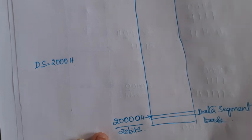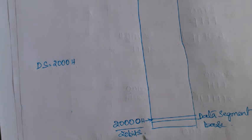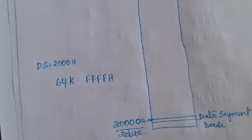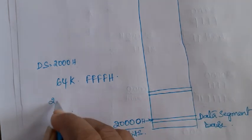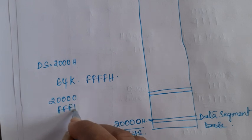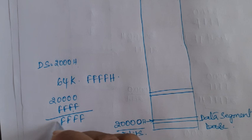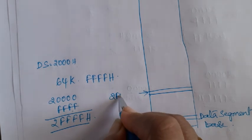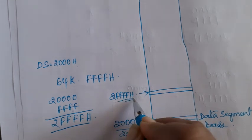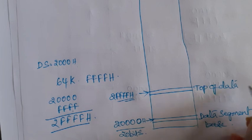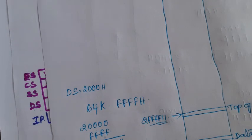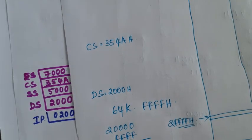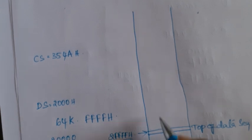This 20-bit base address — with the four least significant bits always being 0 — defines the start of the data segment. Since each segment is 64K, the end address of the data segment is obtained by adding 64K (FFFFh) to the segment base address, giving the 20-bit physical address of the top of the data segment. Similarly, for the Code Segment with contents 354Ah, the physical base address of the code segment is 354A0h.